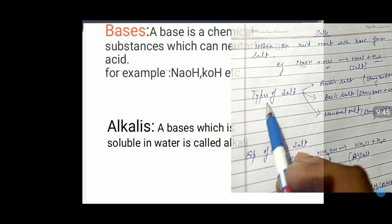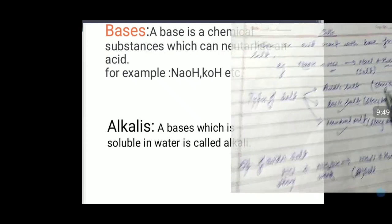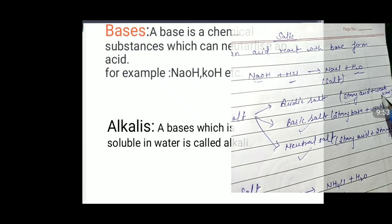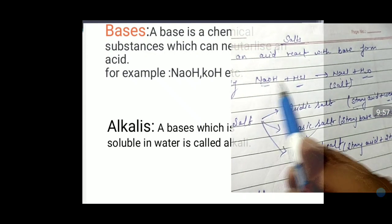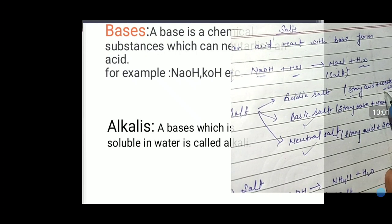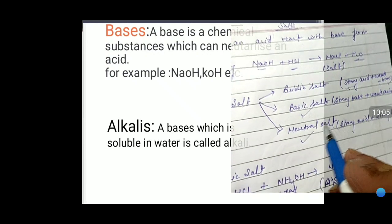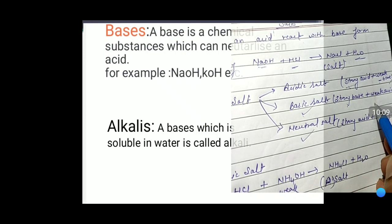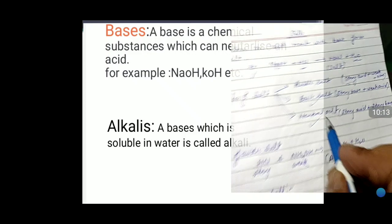There are three types of salt: acidic salt, basic salt, and neutral salt. Acidic salt is formed from a strong acid and a weak base. Basic salt is formed from a strong base and a weak acid.